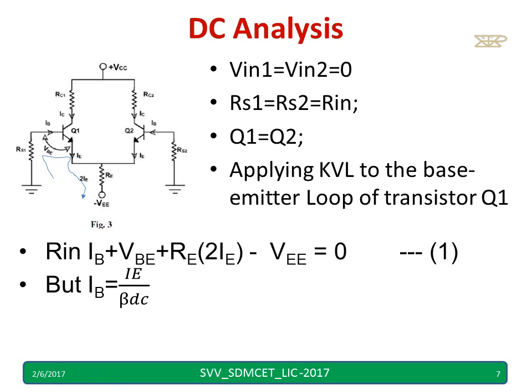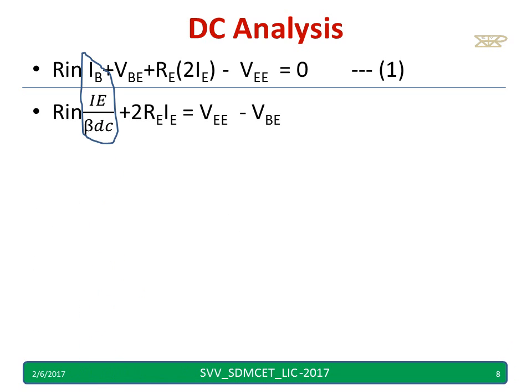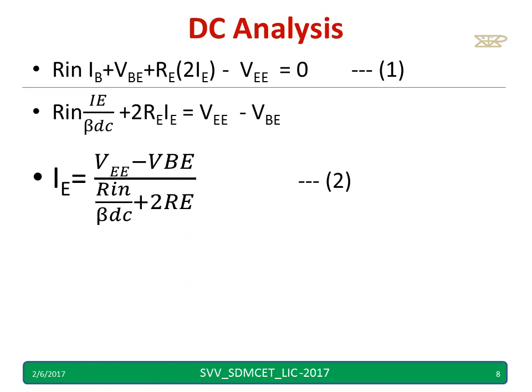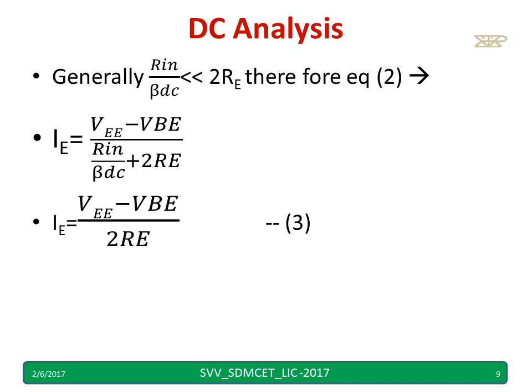We know IB equals IE divided by beta DC. So we replace IB by IE/beta DC and rewrite the equation. Taking IE common on the left-hand side, we get IE equal to VEE minus VBE, divided by RIN/beta DC plus 2RE. Here VBE is 0.6 V for silicon and 0.2 V for germanium. Generally RIN/beta DC is very small compared to 2RE, so we can neglect it. The equation simplifies to IE equal to VEE minus VBE divided by 2RE.